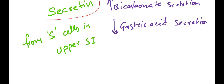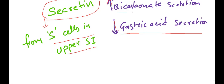Coming to secretin. Secretin is derived from S-cells in the upper small intestine. The functions of secretin are decreasing gastric acid secretion and increasing bicarbonate secretion from the pancreas and hepatic cells.